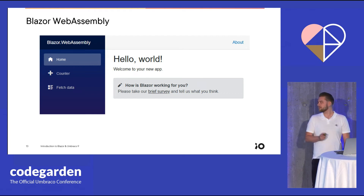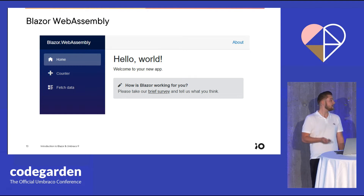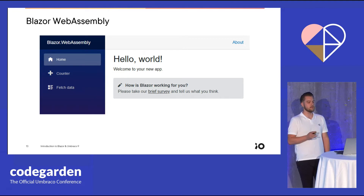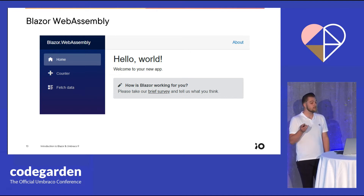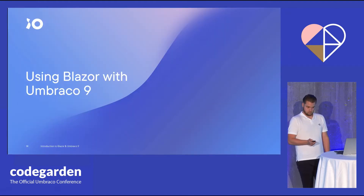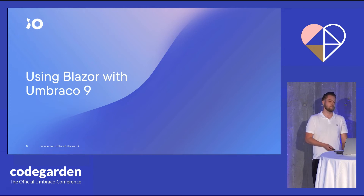Instead of the blazor.server.js file, our WebAssembly application relies on a blazor.webassembly.js file, which in turn downloads the .NET runtime and all the compiled DLLs of our application so that it can run in our browser. When installing and launching our Blazor WebAssembly application for the first time, we'll notice quite a similar-looking Hello World application. Both versions of Blazor are component-based, and other than a couple of nuances between the two versions, we're able to reuse the same components in both versions of Blazor.